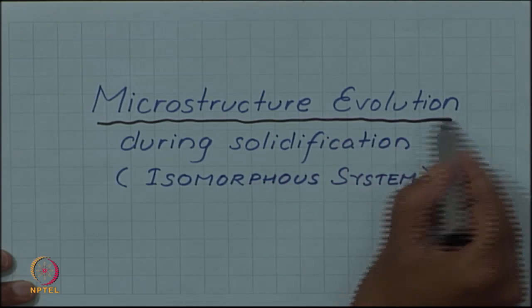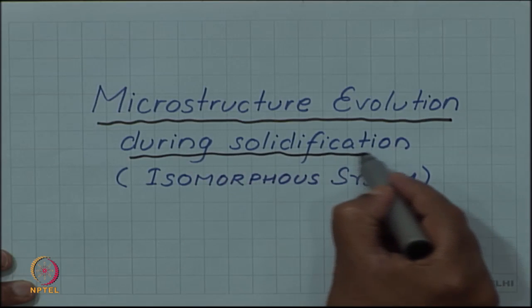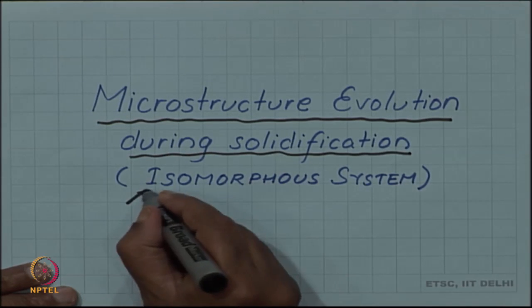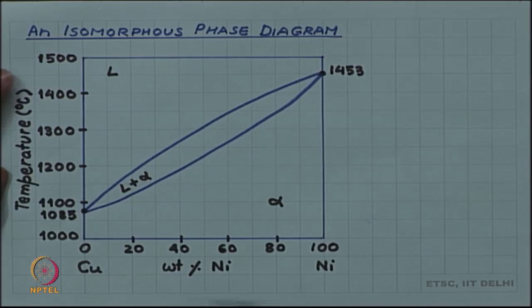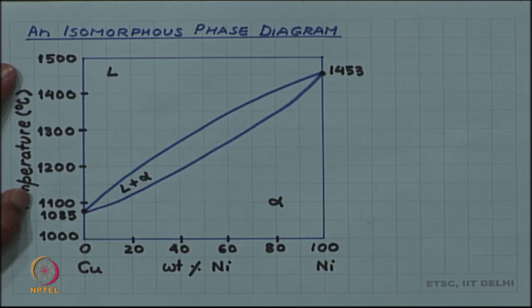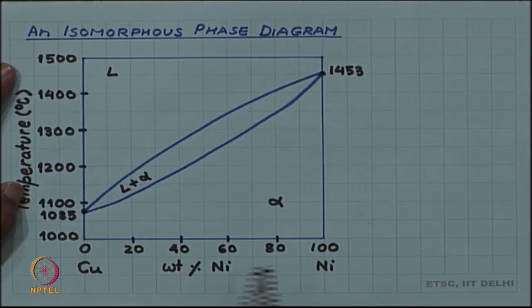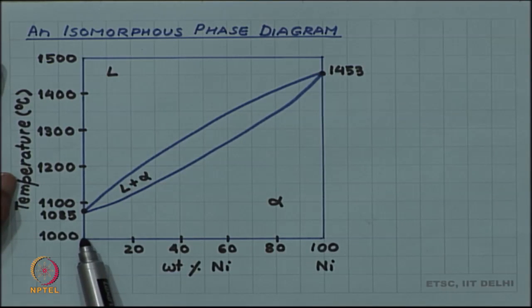Let us look at how a phase diagram helps in the study of microstructure evolution during solidification. I am using a new phrase - isomorphous system. An isomorphous phase diagram is nothing but what we have been seeing; the copper-nickel diagram is an example. It means there is a single crystalline phase at lower temperature, all the way from copper to nickel.